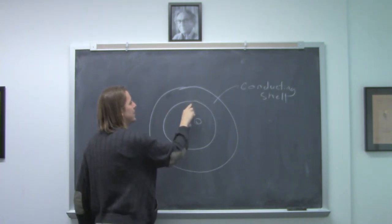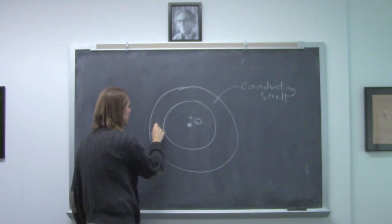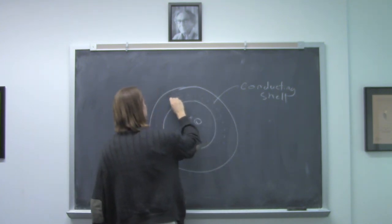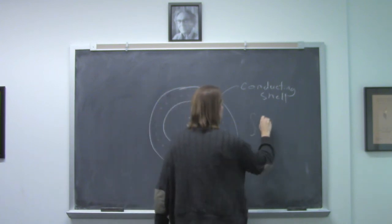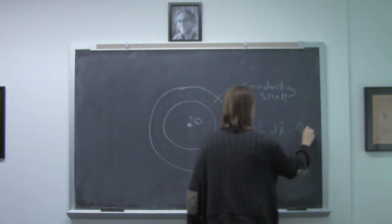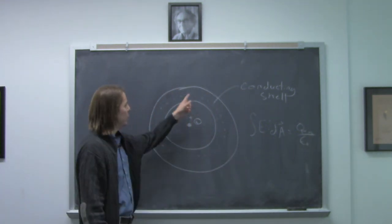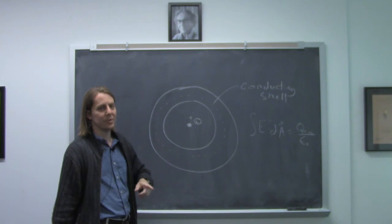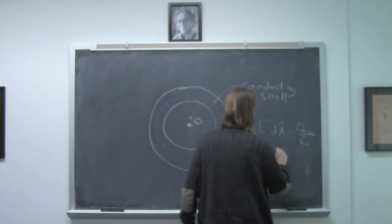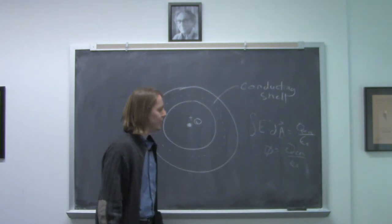Those field lines would naturally hit perpendicular to this inside metal surface. But what if we were to draw a Gaussian sphere here? Well there, integral of E dot dA equals Q enclosed over epsilon naught. We know the E field inside the metal has to be 0. The electrostatic field inside the metal is always 0. 0 equals Q enclosed over epsilon naught.